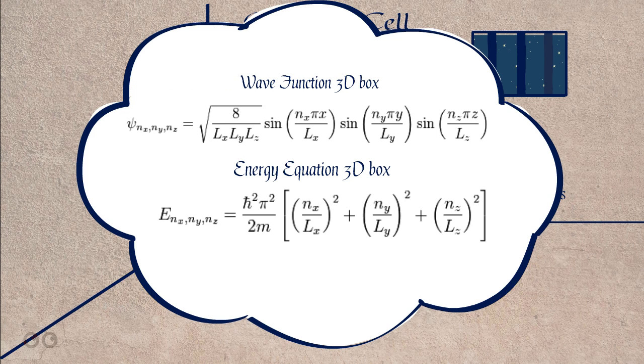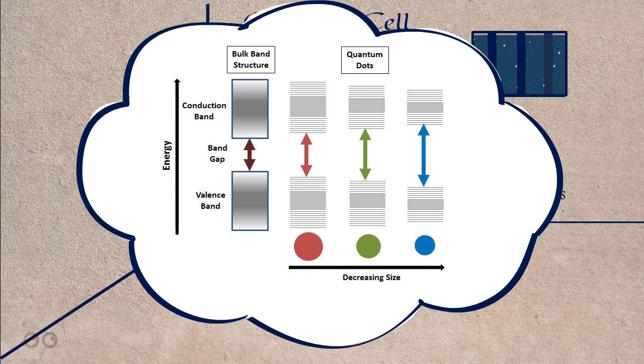Therefore, since we are in a cell, we are considering the wave function and energy equation of a 3D box. As you can see, both of the wave function and energy equation have a dependence on the length or dimensions of the barrier in which they are confined to. Therefore, if you are somehow able to dynamically control the dimensions of the cell, you should be able to control the wavelength of light that is observed through the particle transitions.